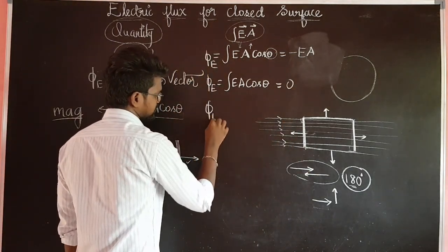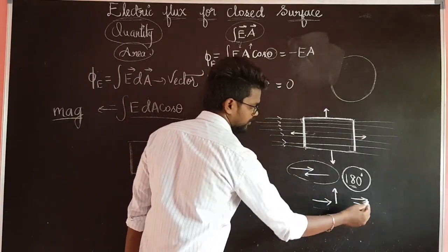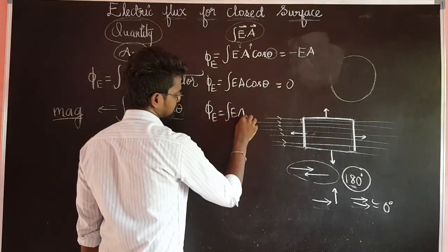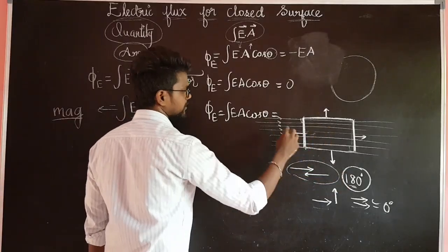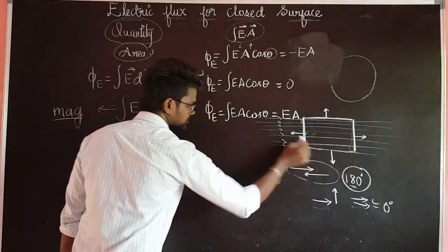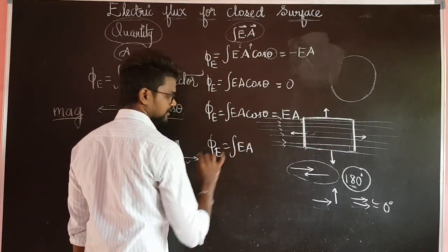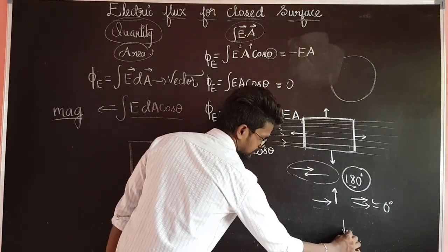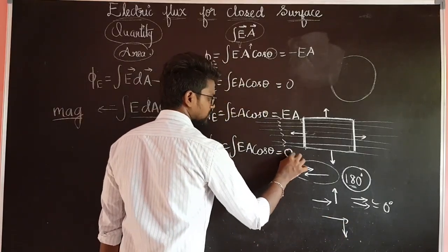In another case, on this side the electric field and normal are both pointing the same direction, so the angle is 0°. The integral of E·A·cosθ with θ = 0° gives cos 0° = 1, so the flux is E·A. On yet another surface the electric field is at 90° to the normal, so cos 90° equals 0 and the electric flux is 0.